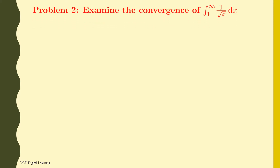Problem 2. Examine the convergence of the integral of 1 by square root of x dx from 1 to infinity. Solution. The given integral, integral of 1/√x dx from 1 to infinity, is an improper integral of first kind as the upper limit is infinity.